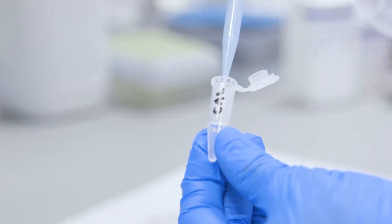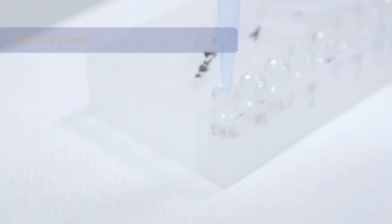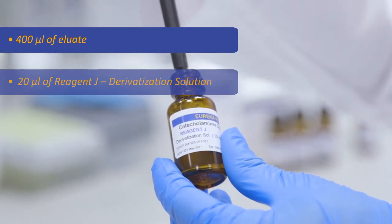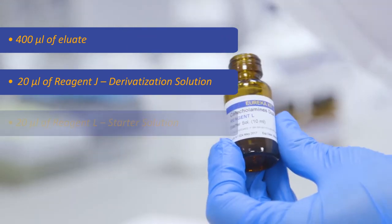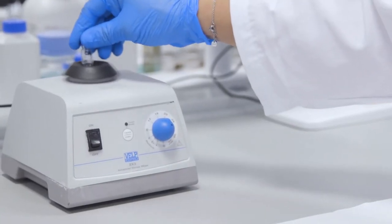The next phase involves the derivatization of catecholamines. Pipette sequentially into 1.5 milliliter reduced volume glass vial with stopper: 400 microliters of eluate, 20 microliters of reagent J derivatization solution, 20 microliters of reagent L starter solution. Activate the vortex for five seconds.